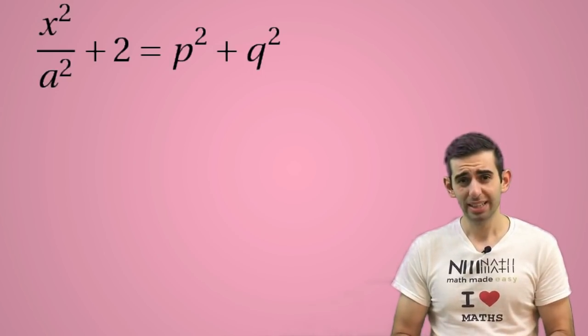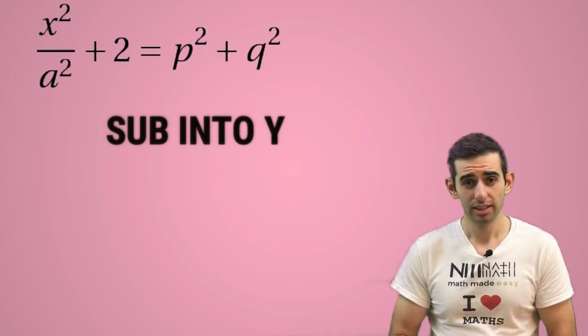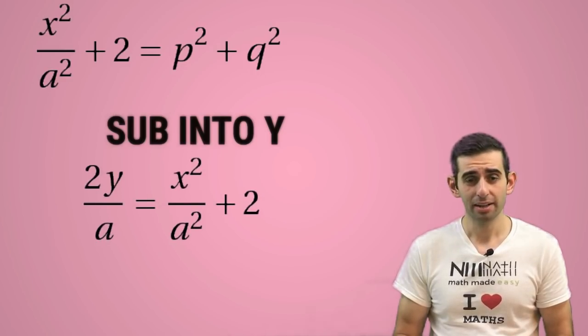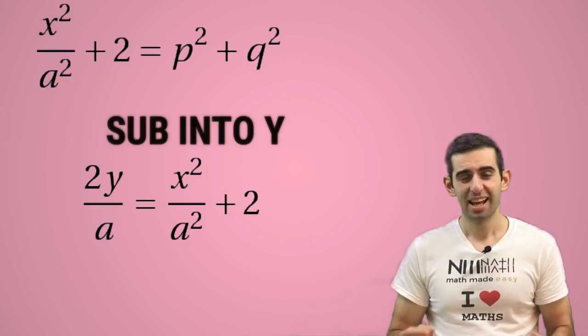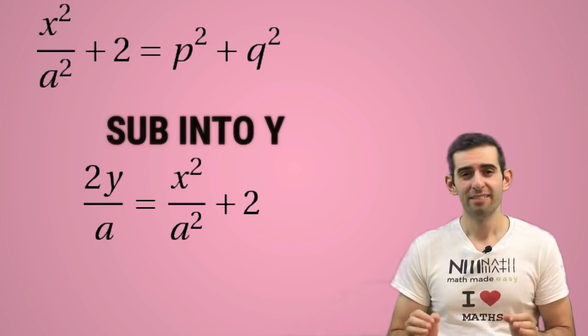Now we can just directly substitute that into the y equation and we get 2y/a = x²/a²+2. And p and q are now gone. That is our Cartesian equation.